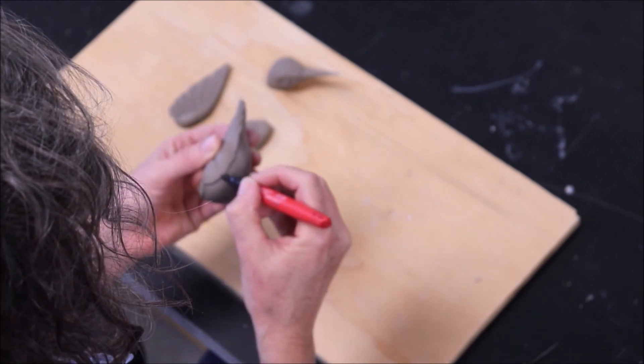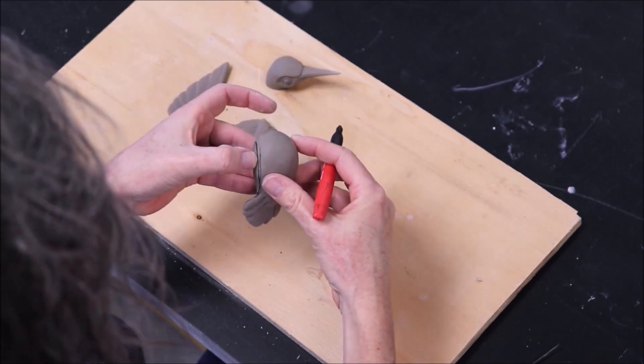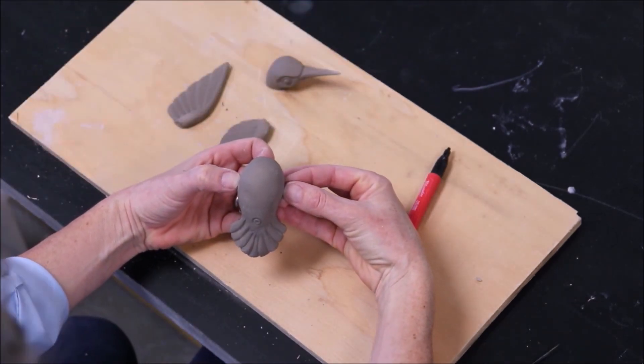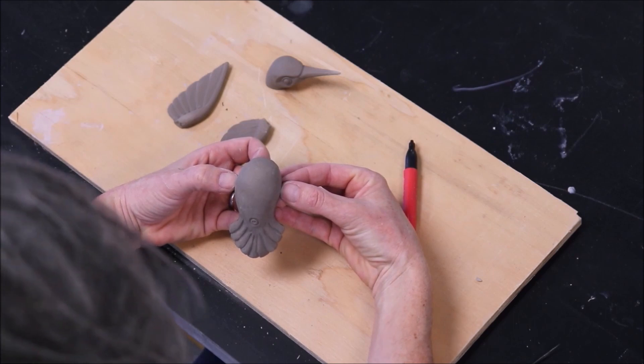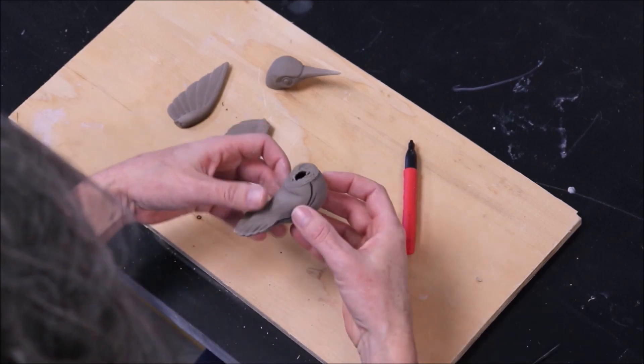I like to use a Sharpie to mark the dividing line because it makes it easier to see the undercuts. And when it comes time to create the clay bed, I can just pay attention to the Sharpie line and follow that as I go.